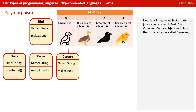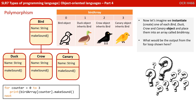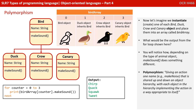Now let's imagine we instantiate one of each — a bird, duck, crow, and canary object — and place them into an array called bird array. What would be the output from this loop: for counter equals zero to three, access bird array at element counter and each time call make sound? Well, as it goes through the loop, it first outputs chirp, followed by quack, squawk, and tweet. You can see how, depending on the type of animal object, make sound does something different.